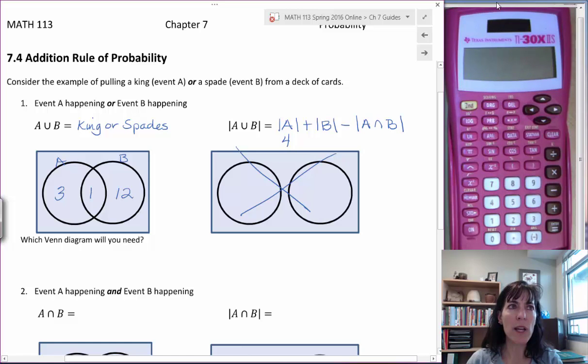The cardinal number for B, that is our 13 spades. And then subtracting off that one king in the middle that we have shared between both of the event A and B, and we end up with 4 plus 13 is 17, minus 1 will be 16.